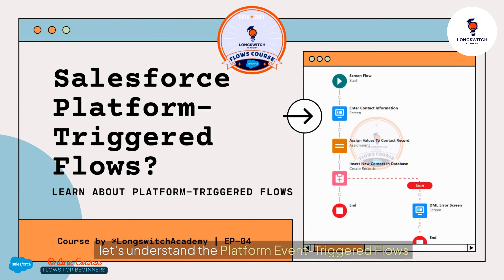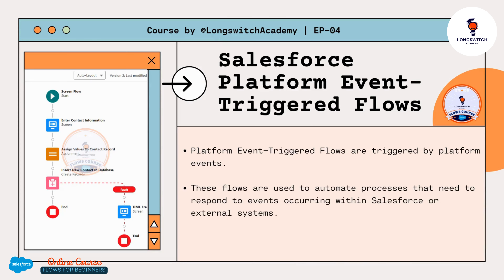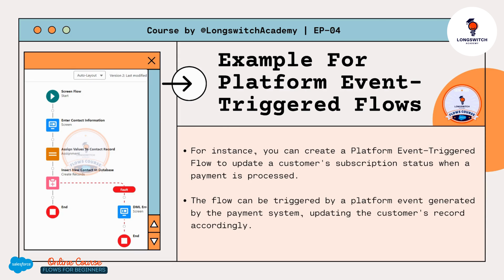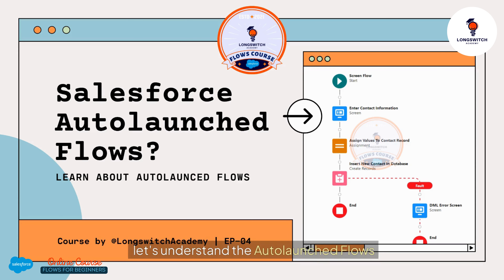Platform Event Triggered Flows are triggered by Platform Events. These flows are used to automate processes that need to respond to events occurring within Salesforce or external systems. For instance, you can create a Platform Event Triggered Flow to update a customer's subscription status when a payment is processed. The flow can be triggered by a Platform Event generated by the payment system, updating the customer's record accordingly.